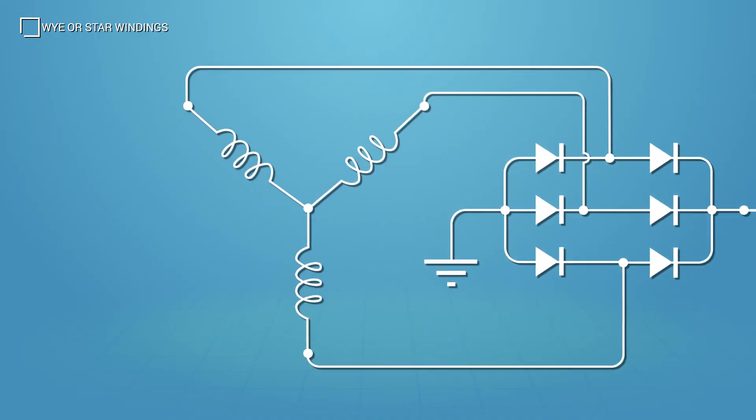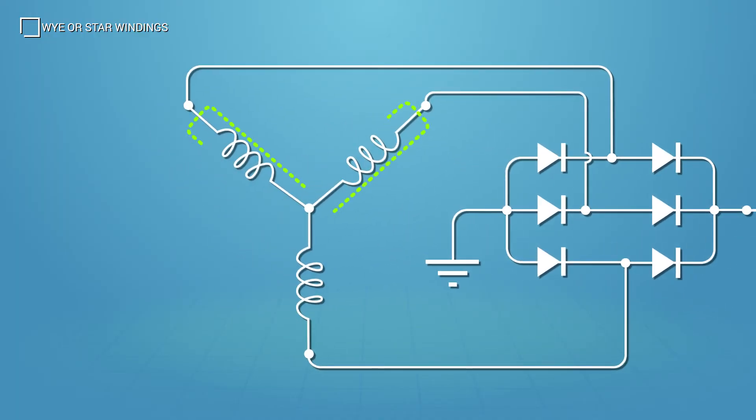Each circuit in a Y or star type stator is made up of two legs connected in series. When a pair of windings is used to generate current flow, the third winding, or leg, is said to be neutral.